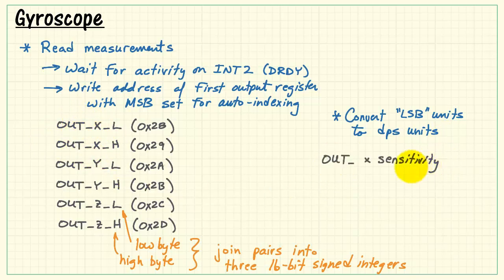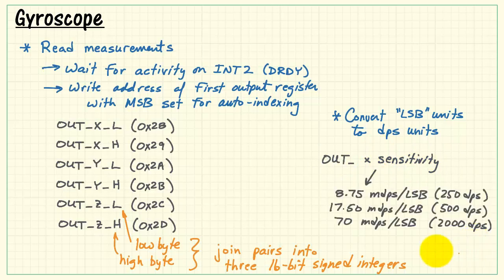Now, initially these are in so-called LSB or least significant bit units. We want to convert that to degrees per second.